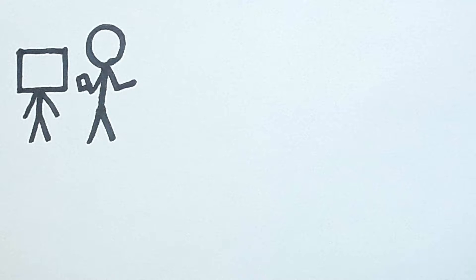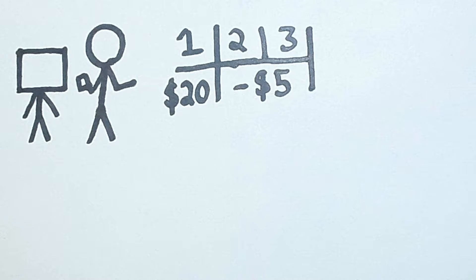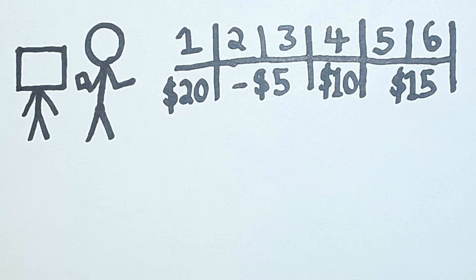A guy walks up to you and gives you the following option. He's going to roll a dice. If he gets a 1, he will give you $20. If he rolls a 2 or a 3, then you need to give him $5. If he rolls a 4, you get $10. And if he rolls a 5 or a 6, you get $15.